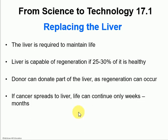So as you can see, liver is compatible — not having a liver is incompatible with life. So if cancer spreads throughout the whole liver, that person would not be able to survive.